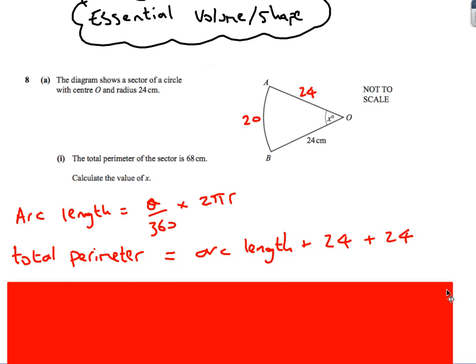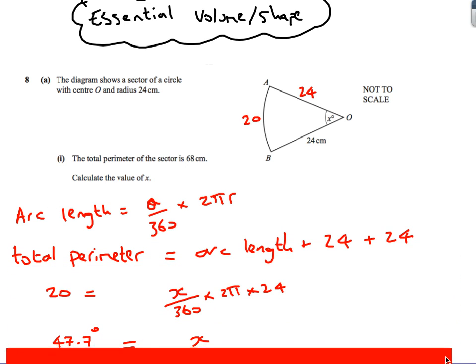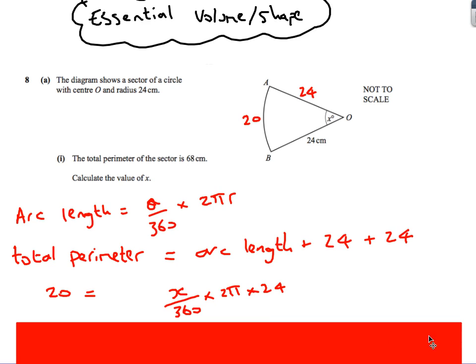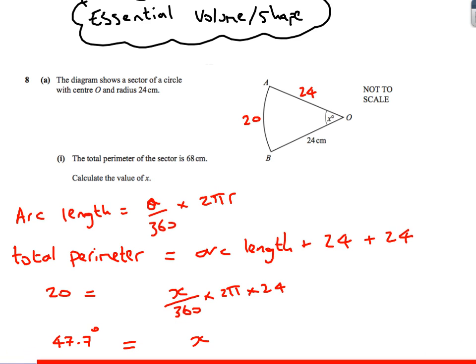That's going to tell me the arc length. And then I can just basically stick my values in. So therefore, the arc length is 20, is equal to x over 360 times 2 pi times, well, the radius is 24. I'm going to stick it into my calculator, so I'll do 20 divided by 2 pi times 24 times by 360. I'm going to get x is 47.7.